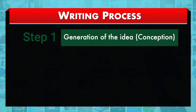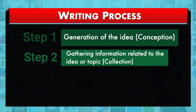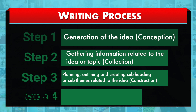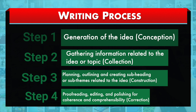The four stages are: first, generation of idea or conception; second, gathering information related to the idea or topic, which may be called collection; third, planning, outlining and creating subheadings or sub-themes related to the idea, called construction; and the fourth and important stage is proofreading, editing and polishing for coherence and comprehensibility, called correction.